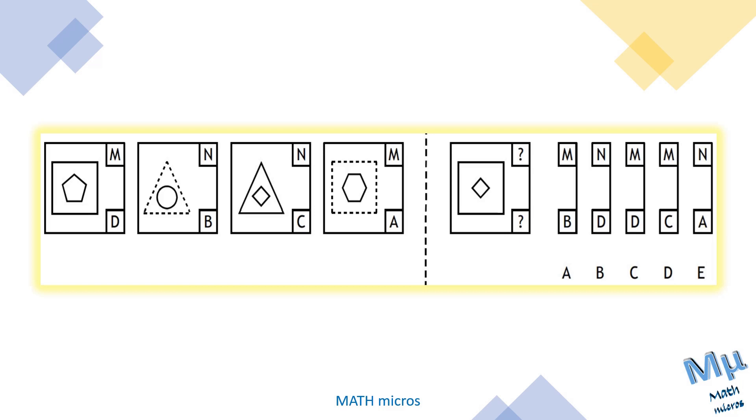As I said earlier, we're going to find out the relation between these four boxes. I see N is repeated as well as M is also repeated. N is found in the second and the third box. What is common here? You can see the triangle is common. Both the solid triangle as well as the dotted line triangle is denoted as N. The solid square as well as the dotted square is denoted as M. We have a solid square in the question box, so the answer should be M.